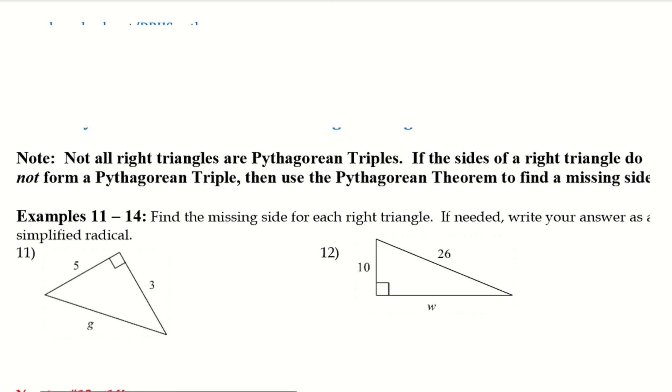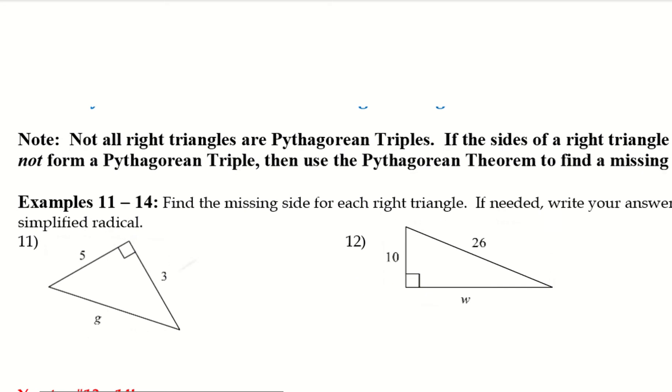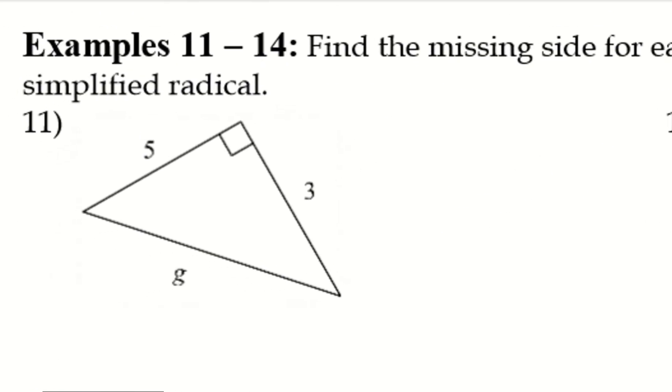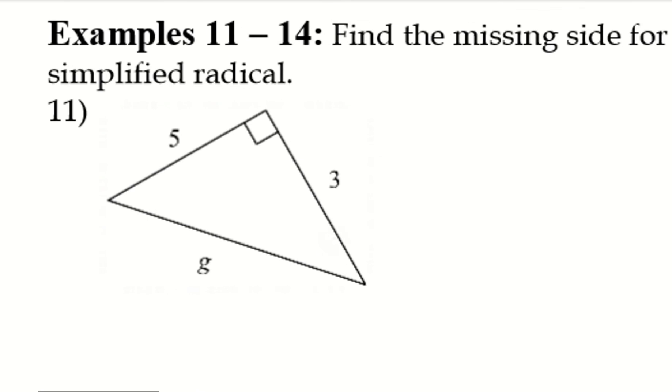So, 11 through 14, we want to find the missing side for each right triangle. If needed, write your answer as a simplified radical. So, if we take a look at 11, now that we've gotten used to our triples, you might be thinking, oh, well, this is 3, 4, 5. But remember, the longest side needs to be the hypotenuse. The 5 is not the hypotenuse. So, therefore, this is not a Pythagorean triple. So, I can go ahead and plug this in to the Pythagorean theorem to find for g.